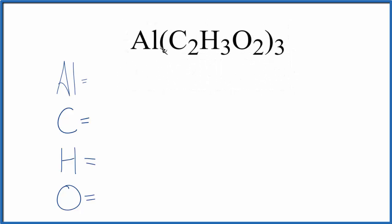So for aluminum, it's not written, but there's assumed to be a one here, one aluminum atom. For the carbon, this three right here, it goes to everything in the parentheses, the whole acetate ion.